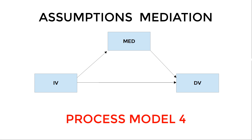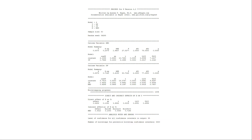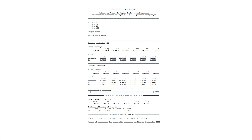How to test the regression assumptions for a mediation with Process Model Number 4. In general, most statistical procedures have assumptions, and if those are violated, you can get test results that are seriously wrong. This applies as well to a mediation analysis with Hayes' Process macro.